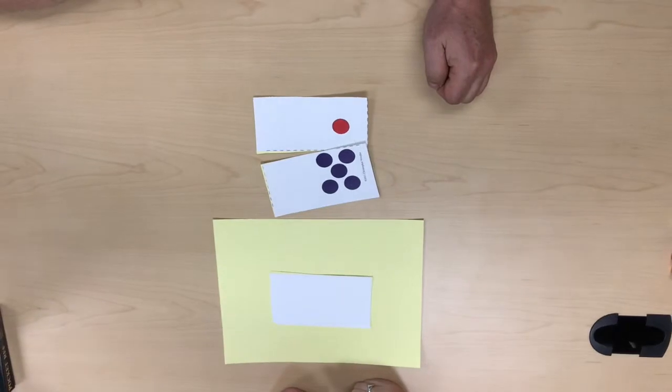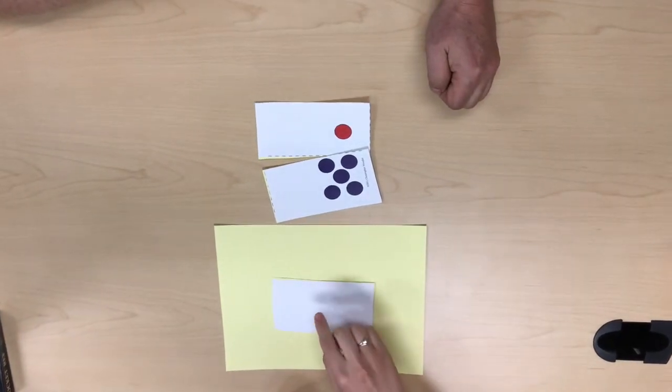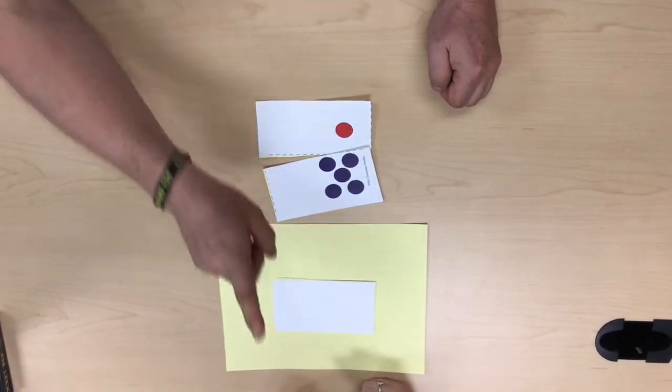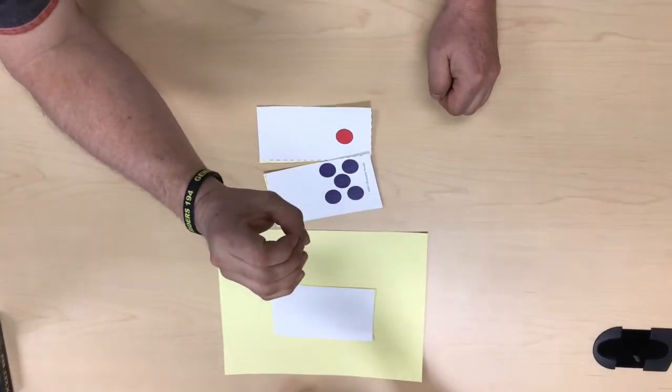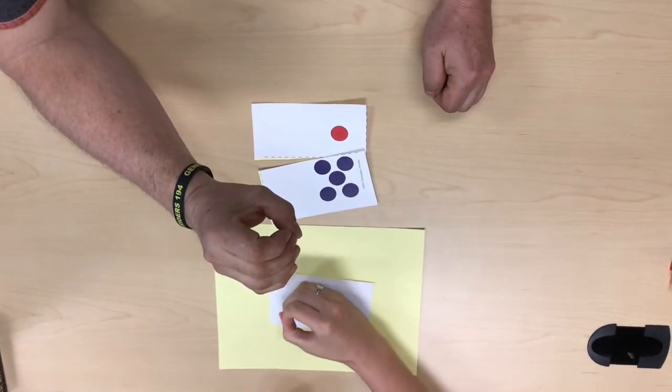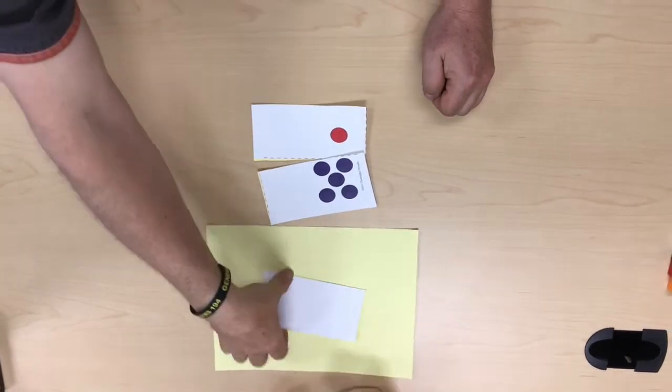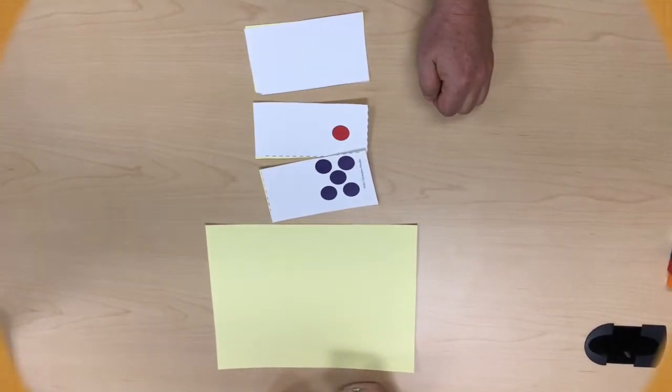Tap and say the number. 5. You tapped with one finger. Tap and say the number. Tap and say the number. 0. Nice. Good job. Stop.